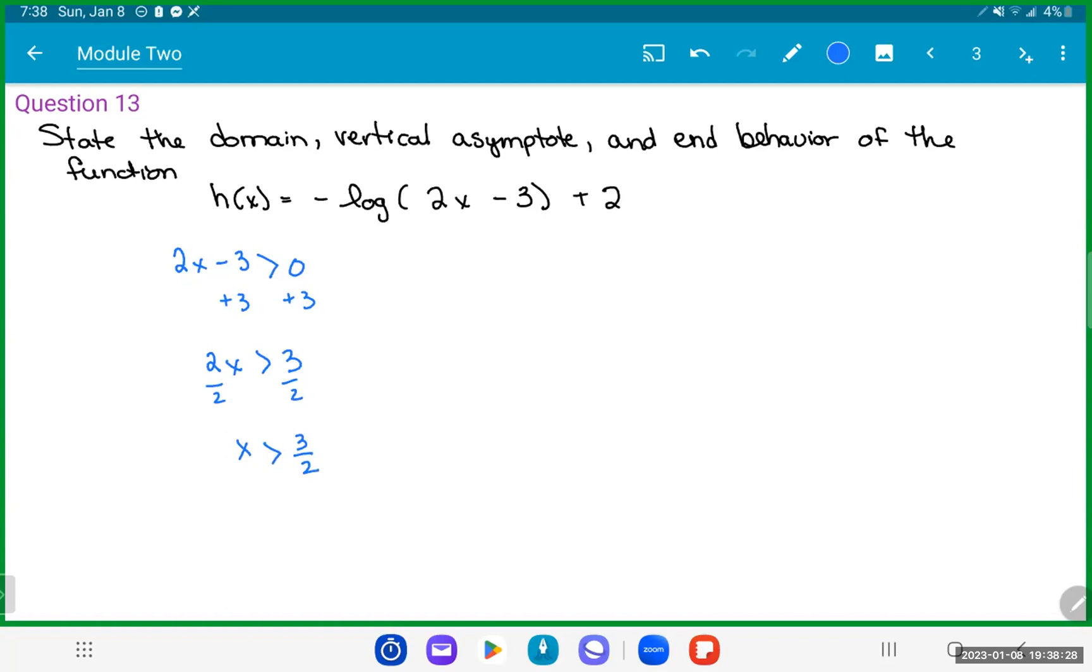So when we have that, then that would give us a domain where x has to be greater than 3 halves, so it can be anywhere from greater than 3 halves all the way out to infinity. That will also give us our vertical asymptote at the value where x is equal to 3 halves.